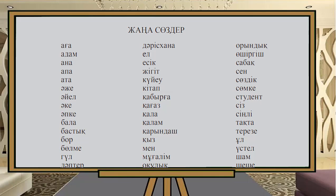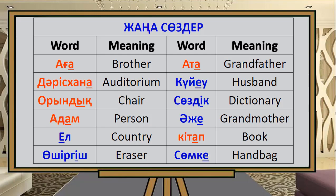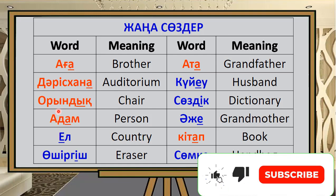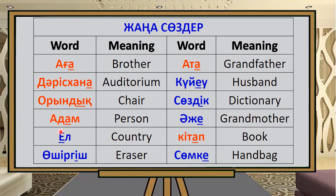These are about 48 new words. The word for 'new words' in Kazakh, and 'words' on its own. The first word means 'brother.' The next word means 'auditorium.' Another word means 'chair.' And another means 'person' or 'human.'